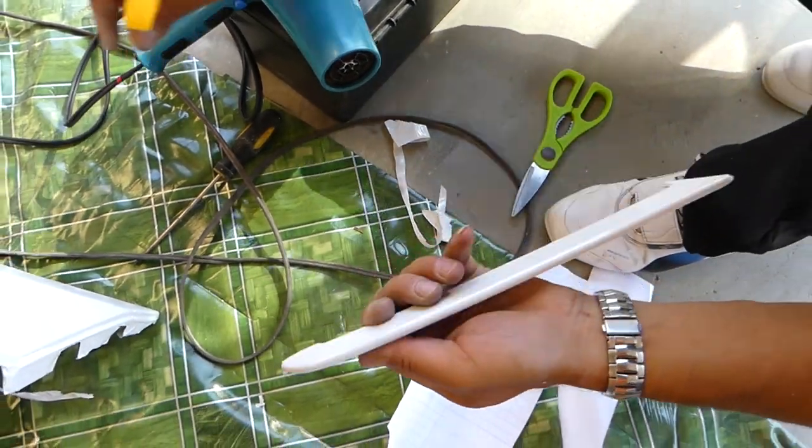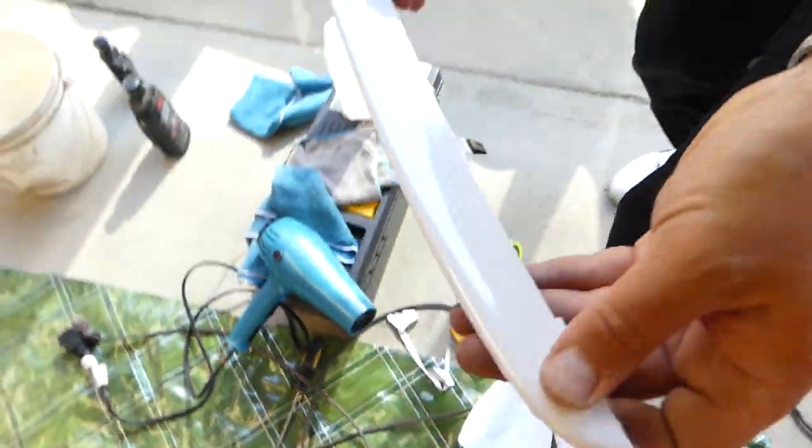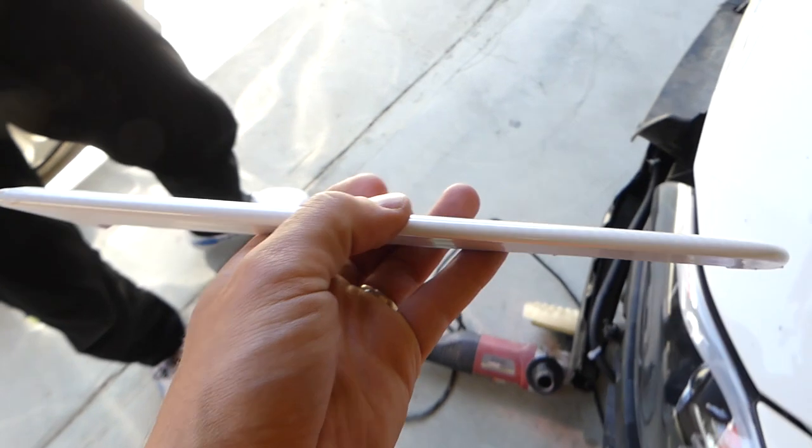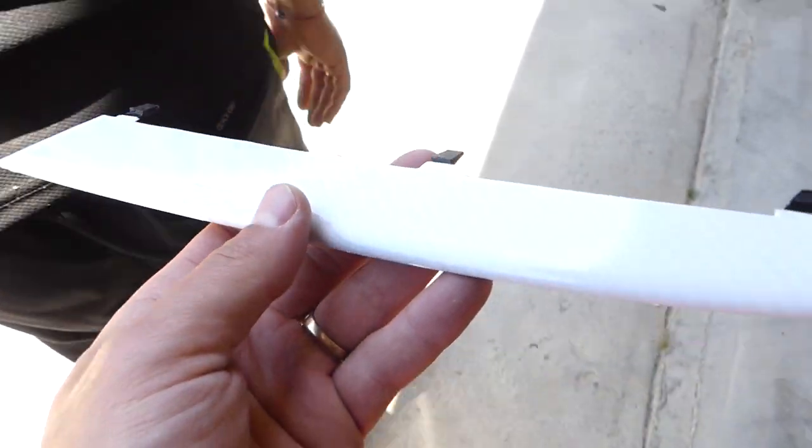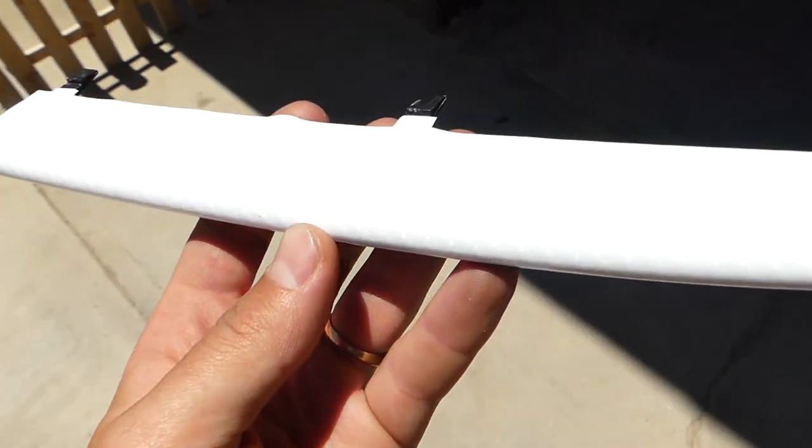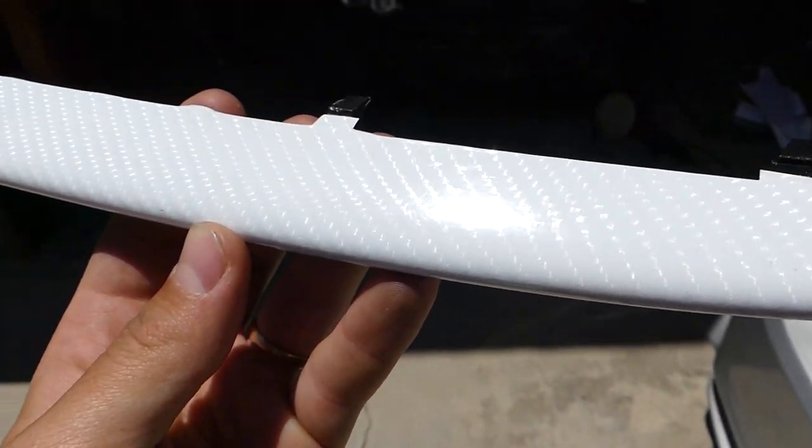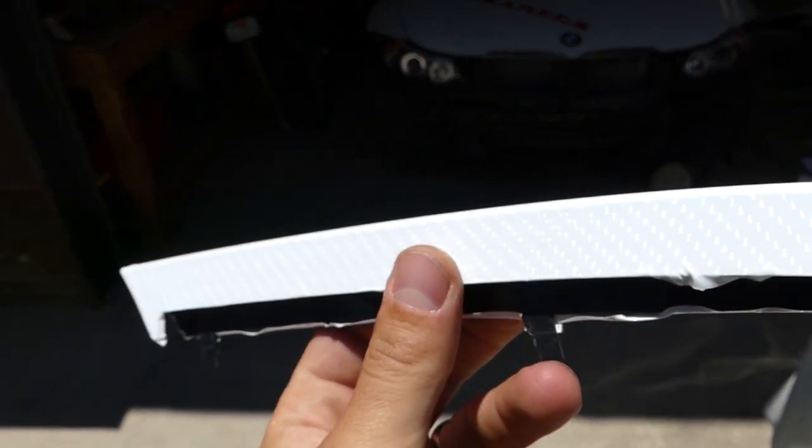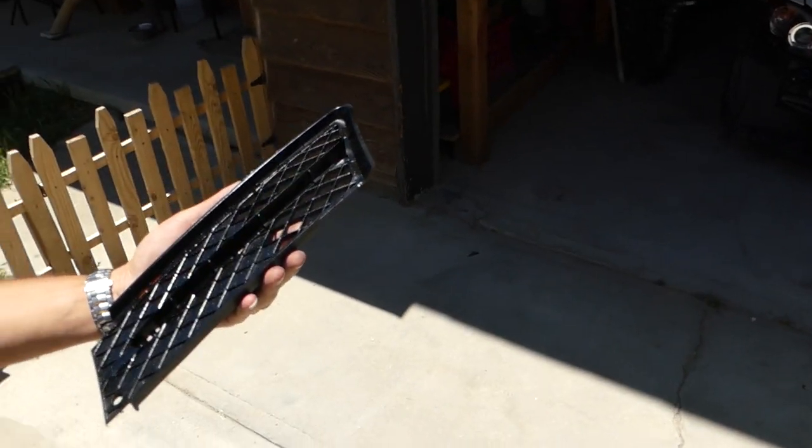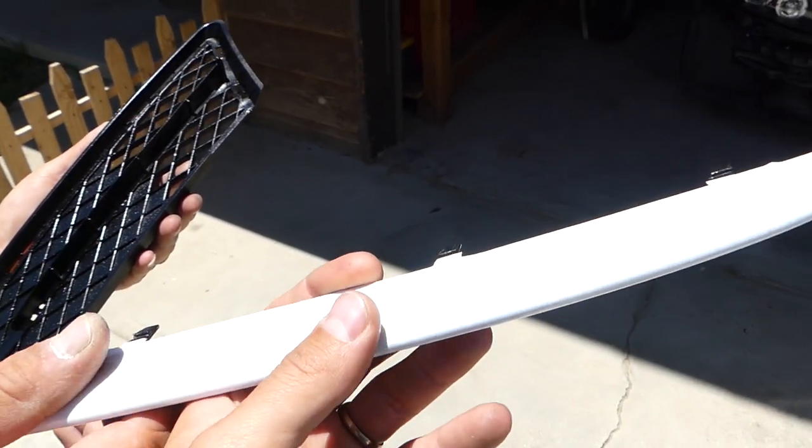So this is it guys. As you can see it looks pretty good. Check it out now in the sunshine. The camera has a hard time focusing. You can see the white carbon fiber. It looks really sick, and the grill is ready as well. We are going to put it together now.